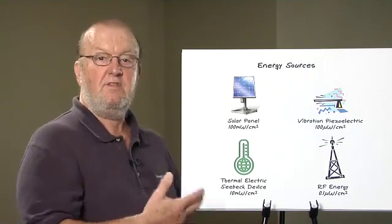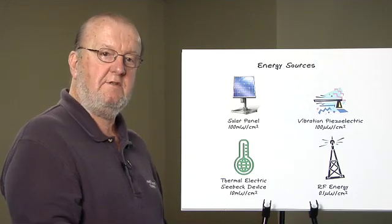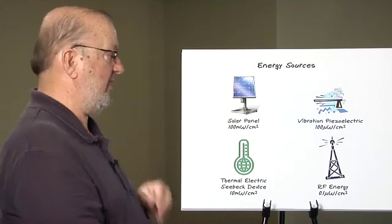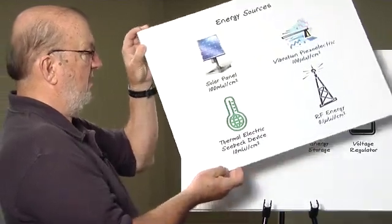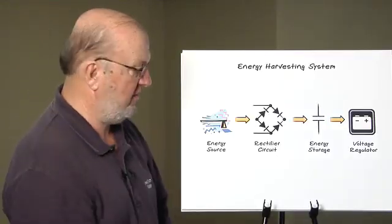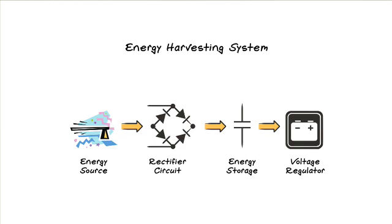What does an energy harvesting system look like? An energy harvesting system needs to have your energy source and a transducer to convert that energy to electrical charge. We need to store that charge in some storage element and then convert that electrical charge into a useful voltage that we can use for our sensing circuit.